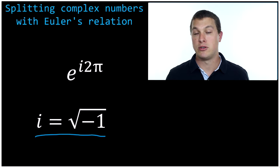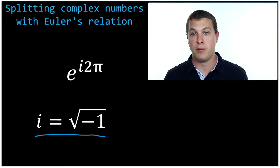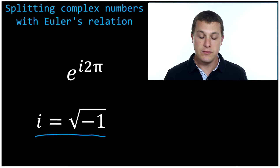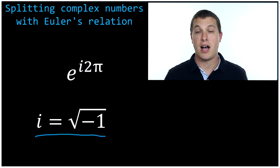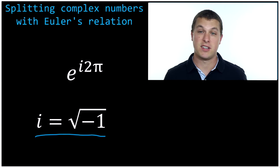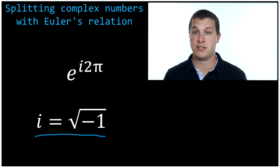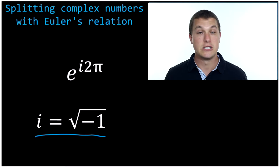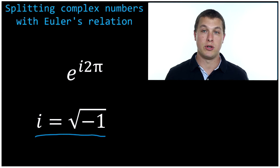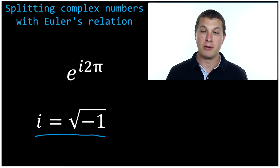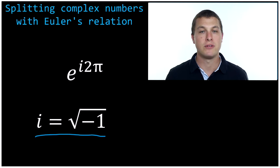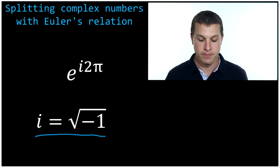Eventually it'll turn out to become a real number. In this video, we're going to talk about how you can take a complex number — which is a combination of a real and imaginary number — and split them up into their two components. If you're not sure what I'm talking about, don't worry. I'm going to show you a few examples and you'll see what I mean.